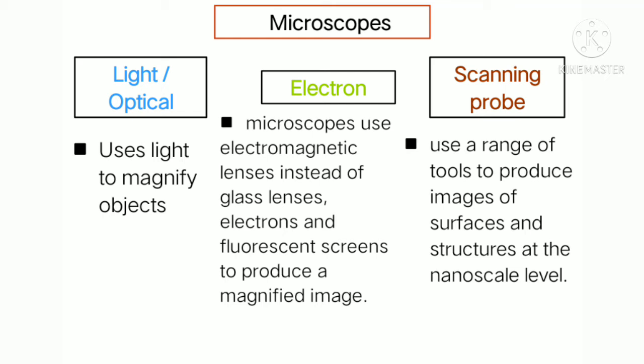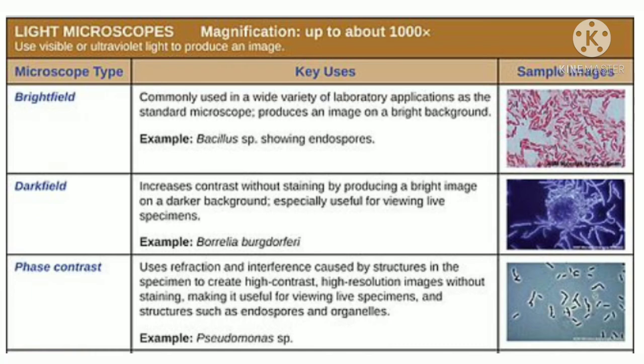The light or optical microscope uses light to magnify objects. The electron microscope uses an electron beam to produce images and has electromagnetic lenses instead of glass lenses — it is a very large instrument. The scanning probe microscope is the most advanced type, using a range of sharp-tipped tools that move over the surface of a specimen to produce images at the nanoscale level.